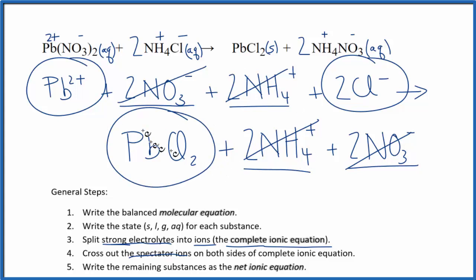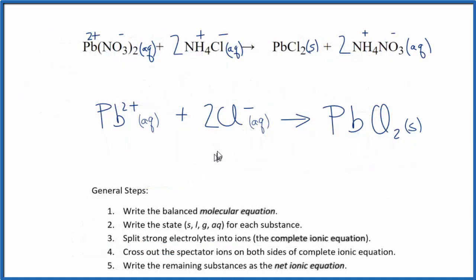So let me clean this up, and we'll write the net ionic equation for this. This is the net ionic equation for Pb(NO3)2 plus NH4Cl. We have our lead 2+ ion, which is aqueous, plus 2 chloride ions, also aqueous, and then the solid PbCl2, lead two chloride.